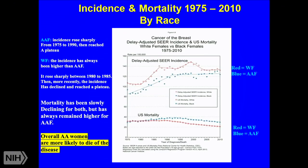Looking at incidence and mortality by race: for both white and African-American females there was a sharp rise in incidence, but incidence has always been higher for white females, with a plateau around 2005–2010. Mortality is declining for both groups, but African-American females unfortunately still have a higher mortality rate.